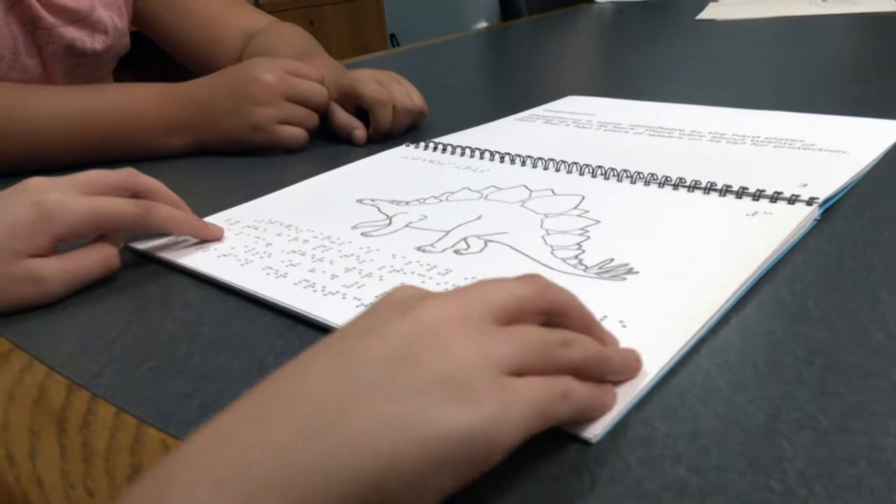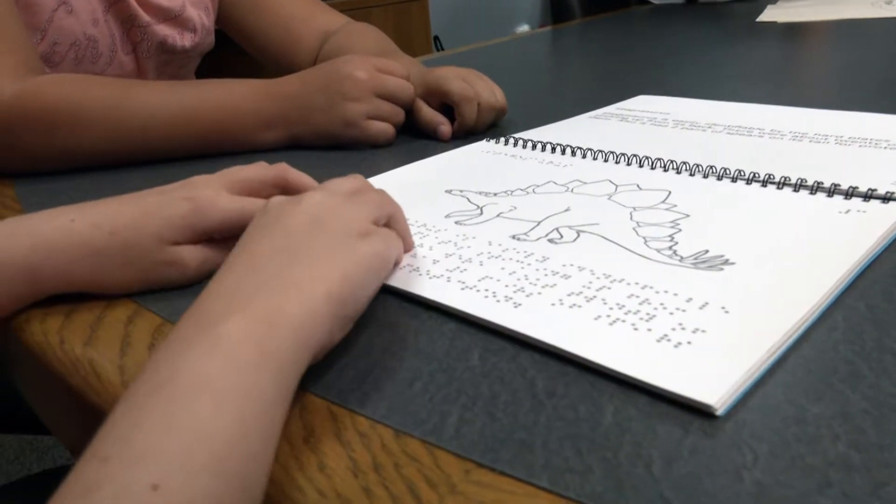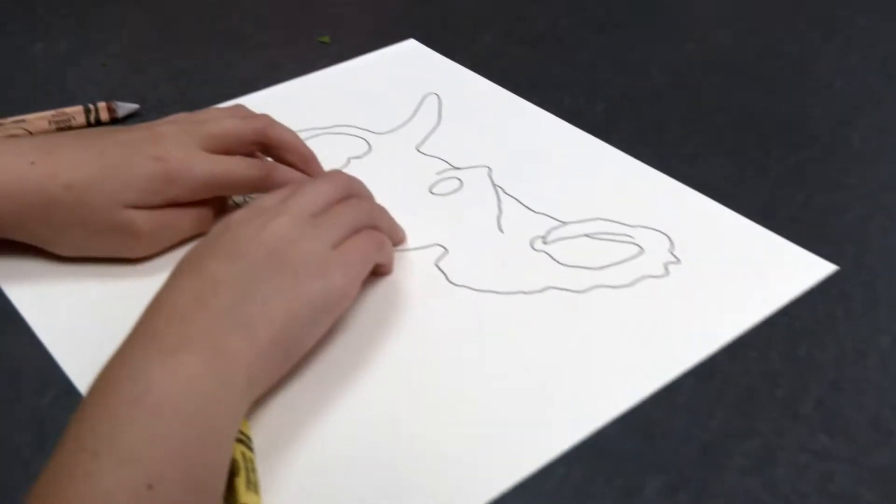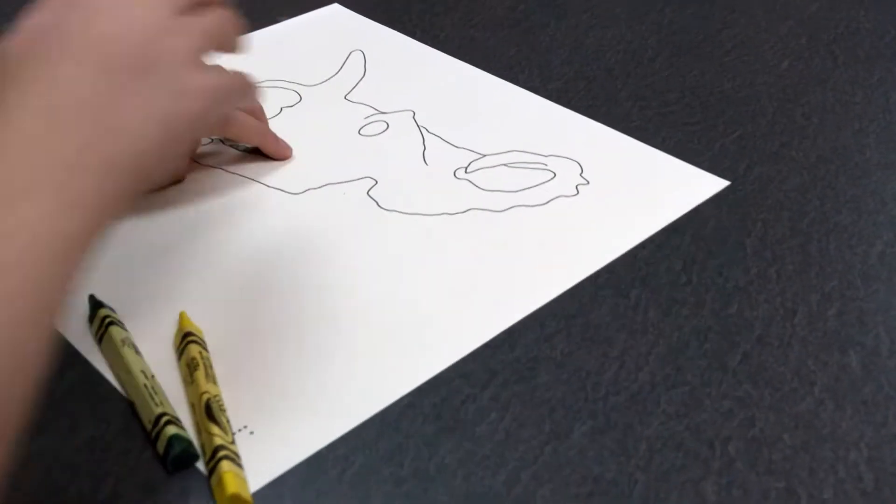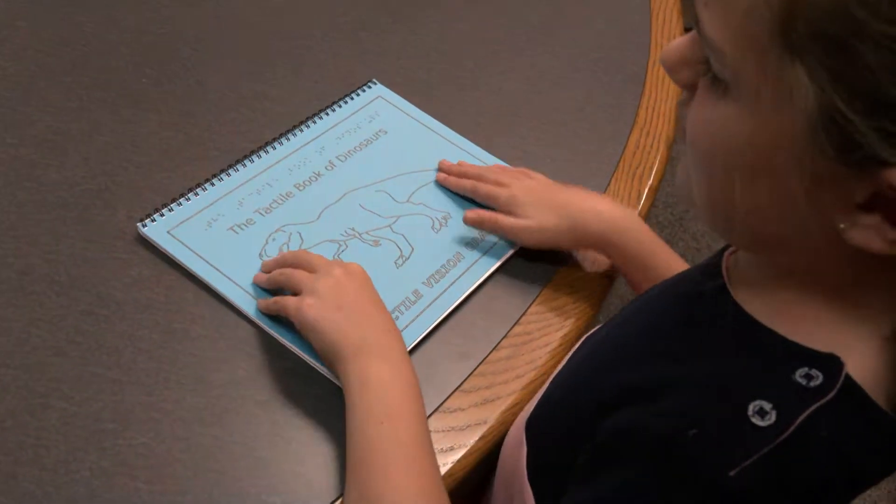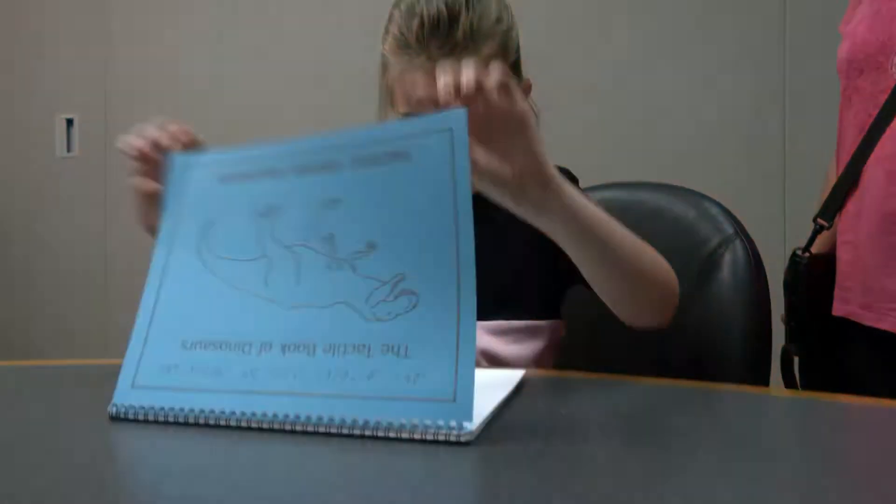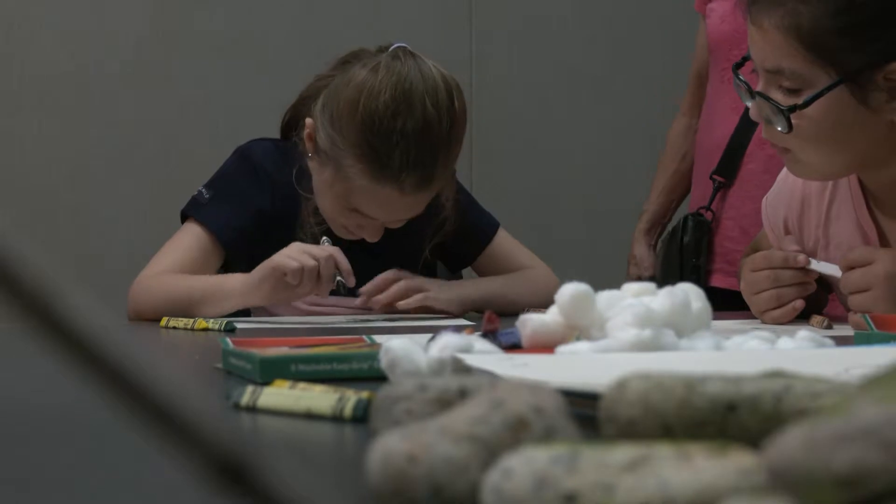In this adaptation of a lesson from the American Museum of Natural History, What Teeth Tell Us, the lesson involved examining pictures of dinosaurs. We used a book of raised line drawings with braille, The Tactile Book of Dinosaurs by Tactile Vision Associates.